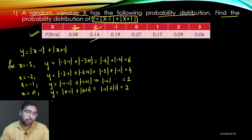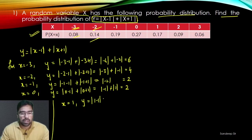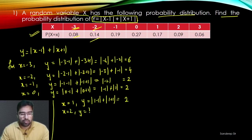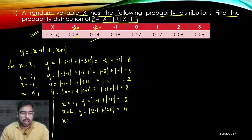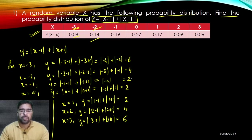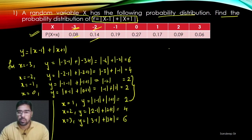Similarly, for X = 1: Y = |1 − 1| + |1 + 1| = 0 + 2 = 2. For X = 2: Y = |2 − 1| + |2 + 1| = 1 + 3 = 4. For X = 3: Y = |3 − 1| + |3 + 1| = 2 + 4 = 6. So Y can take values 2, 4, or 6 — three possible values. Now let us build the distribution table for Y.